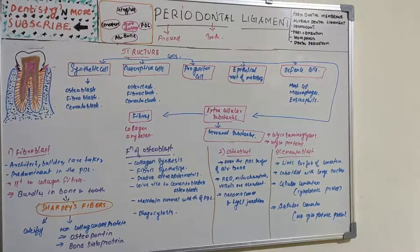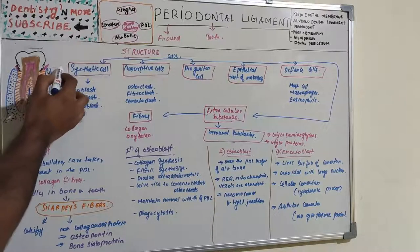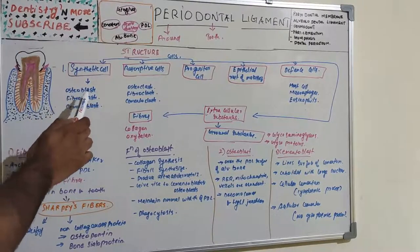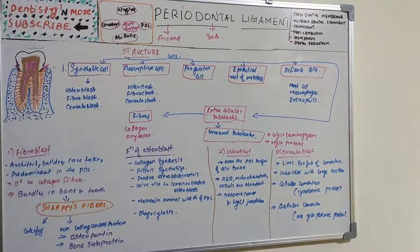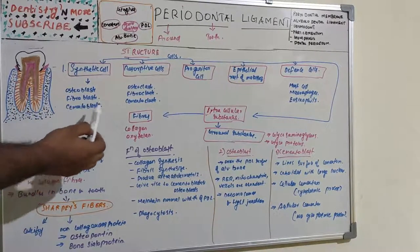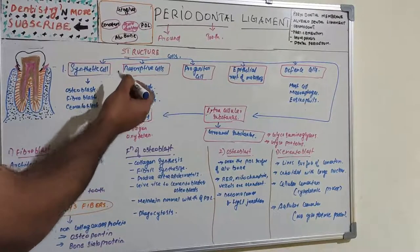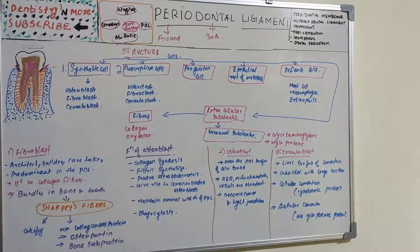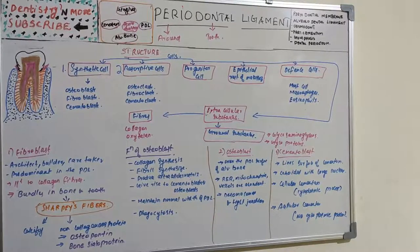The first category is synthetic cells — the cells which produce other structures. That is osteoblast which produces bone, fibroblast, and cementoblast. The second one is resorptive cells, which destruct the cells: osteoclast, fibroblast, and cementoclast, which destruct bone, fibers, and cementum.